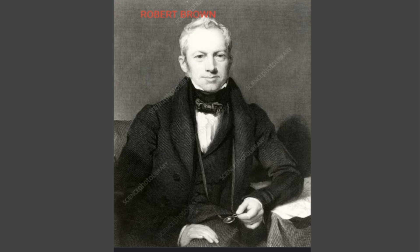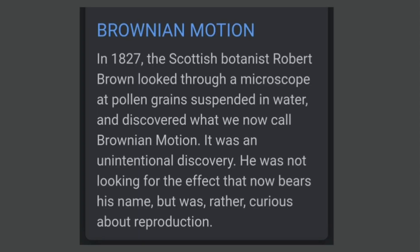Brownian motion is named after the Scottish scientist Robert Brown. Robert Brown discovered the phenomenon of Brownian motion while observing pollen grains in water through a microscope. Brown saw that the pollen moved around randomly in water. This motion was due to the pollen grains being hit by the invisible water molecules. It was an unintentional discovery — he was not looking for this effect but was rather curious about reproduction. This is the zigzag motion of the molecules.